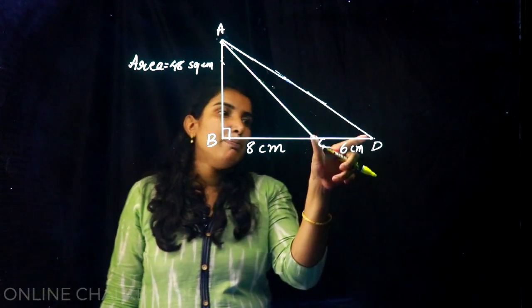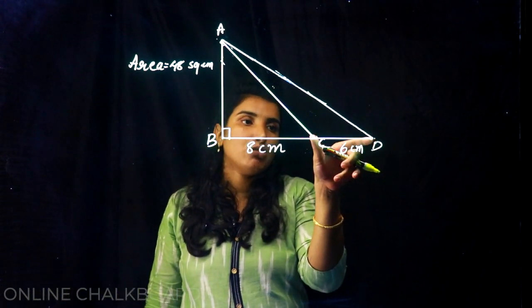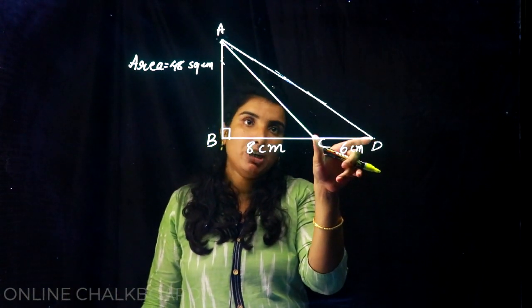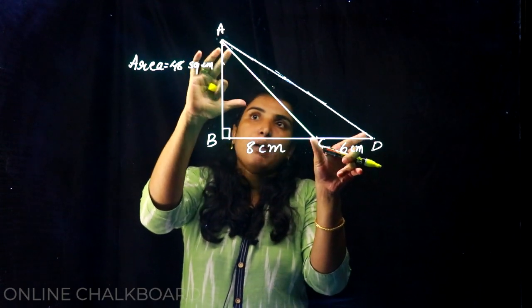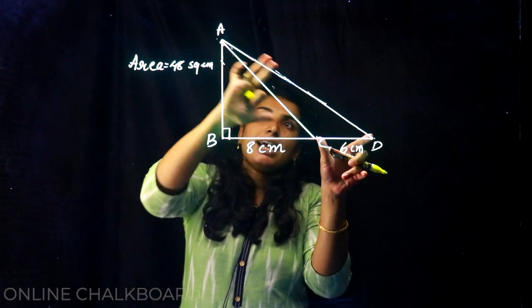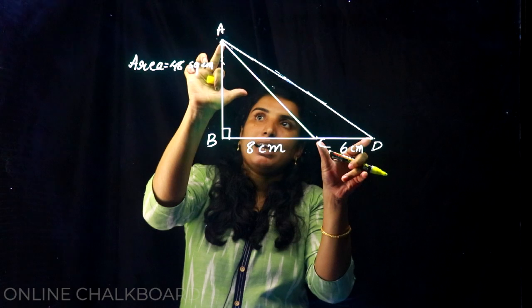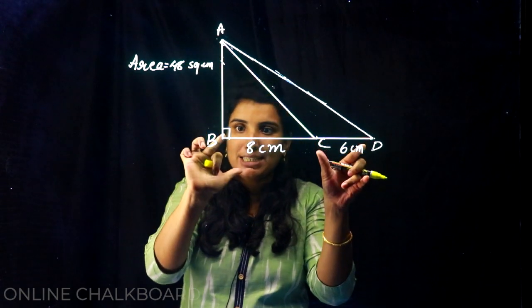We have a base here and a perpendicular height. This triangle has a perpendicular height — this is the height of the triangle.